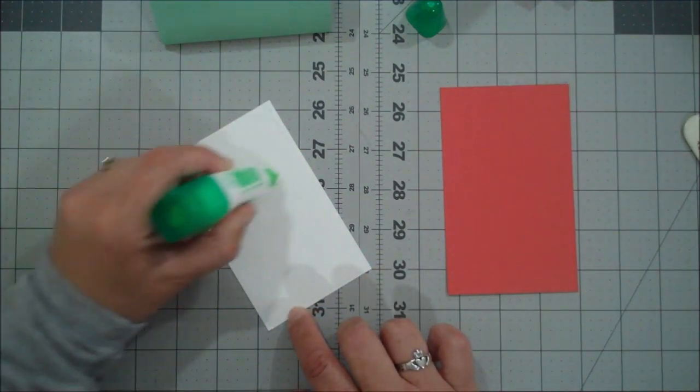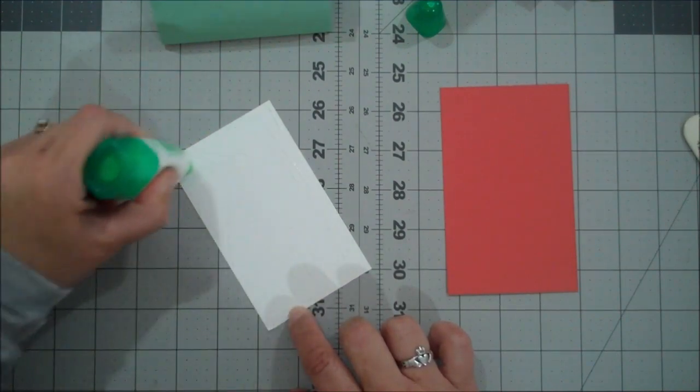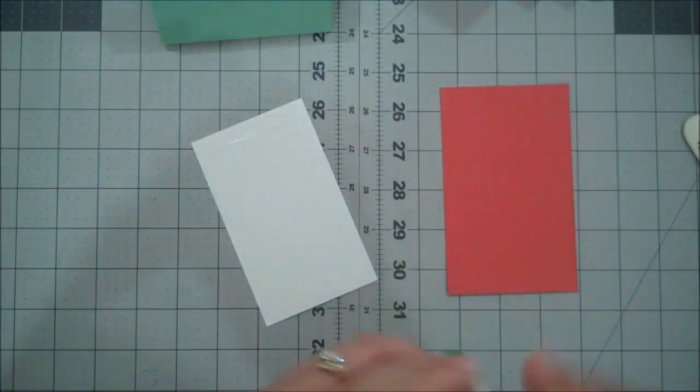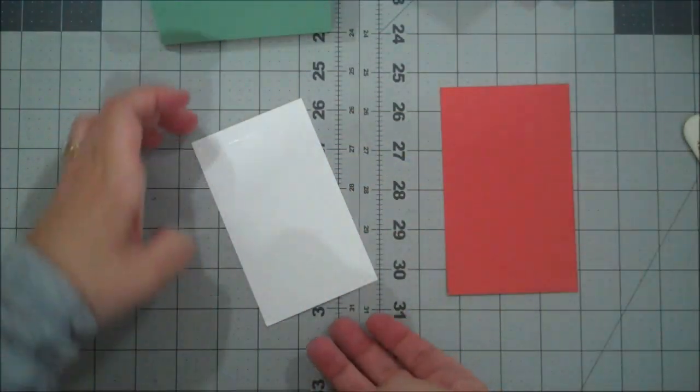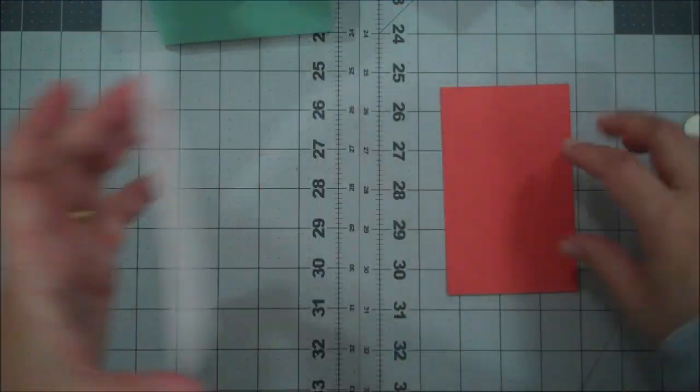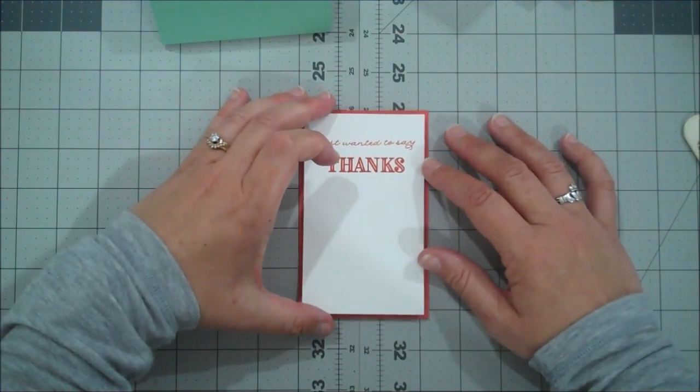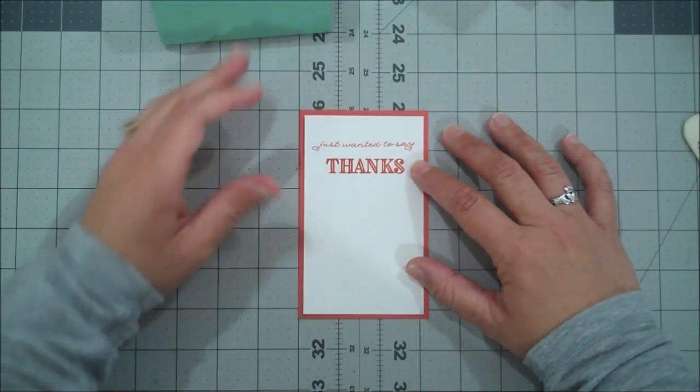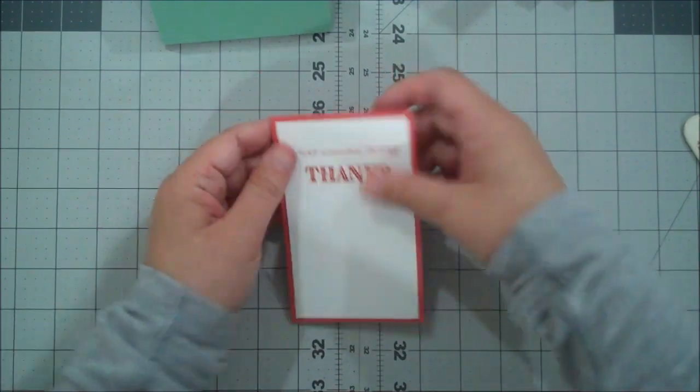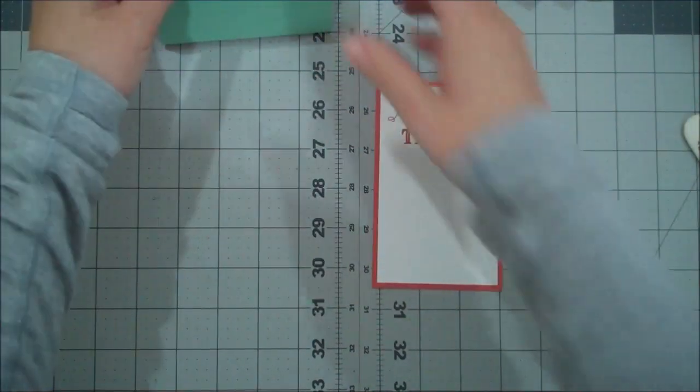So you can order all of these products now and have them early and get to play with them before the new catalog comes. You can also find all of the retiring product lists on my blog. I have posted that at theirishscrapper.com. So many good things happening right now. Lots of deals on the clearance rack. Okay. Let's straighten that out. Looks good.